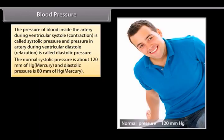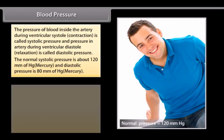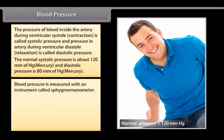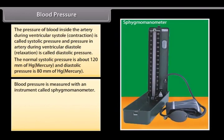The normal systolic pressure is about 120 mm of mercury and diastolic pressure is 80 mm of mercury. Blood pressure is measured with an instrument called sphygmomanometer.